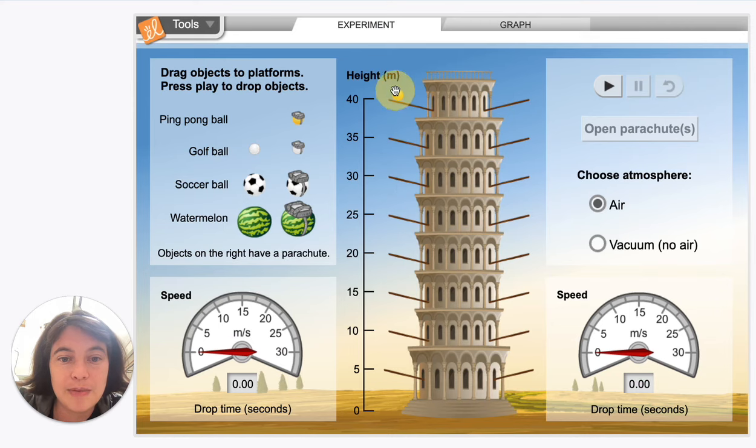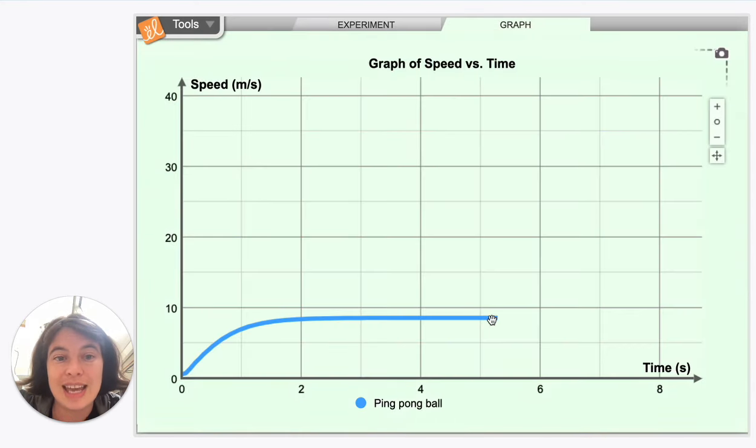And then finally, from 40 meters in height, exact same thing. It speeds up to 8.55 meters per second and then it just stays there. So the time is continuing to increase, but the velocity isn't. It's like there's a limit on how fast this object is going to end up going. There's what we might call a terminal velocity for this ping-pong ball.